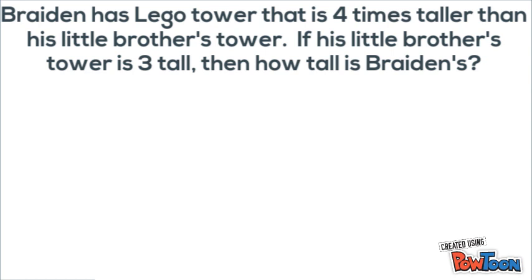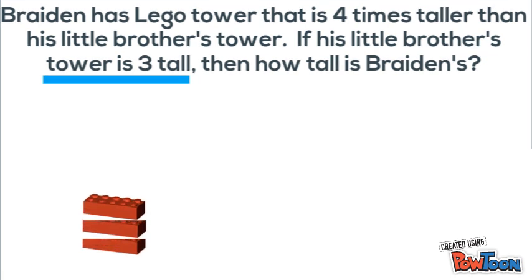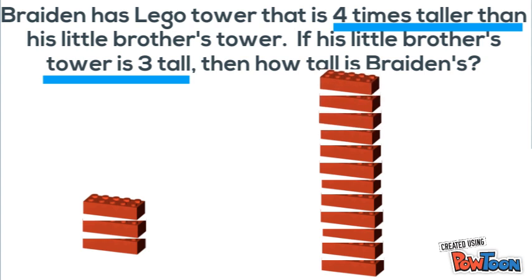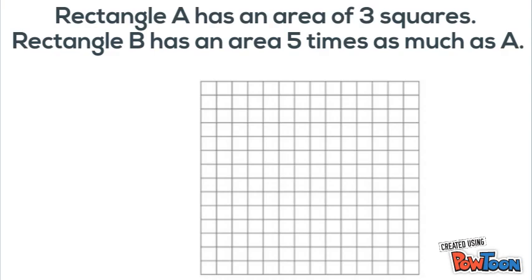Brayden has a Lego tower that's four times taller than his little brother's tower. His little brother's tower is three tall — so let's build that. Now we're told Brayden's is four times taller. Four times means it's four of whatever his little brother's is. So if we make his little brother's four times, we'll have Brayden's. Or we could simply multiply three times four to see that it's twelve tall. The key phrase that lets us know to multiply is 'four times.'